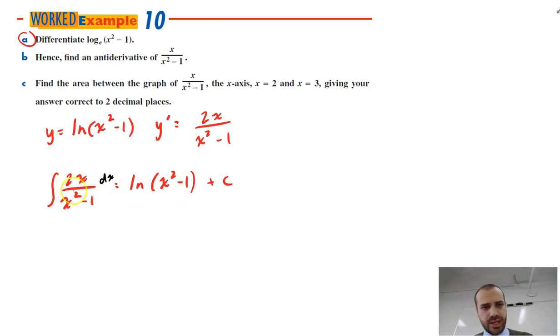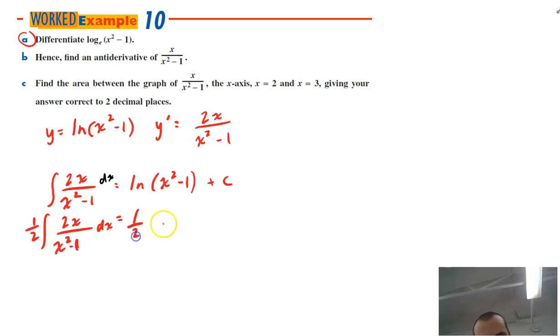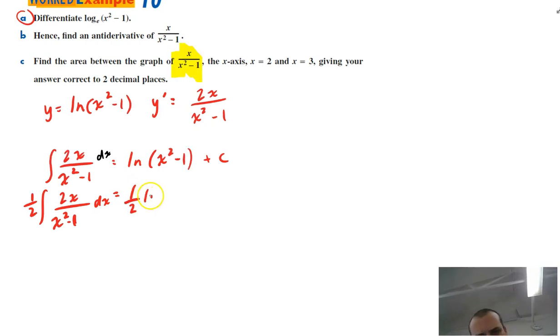So this is 2x over x squared minus 1, so I'm going to have to halve that, which means that 1 half integral 2x over x squared minus 1 with respect to x equals 1 half ln x squared minus 1 plus, and then we're dividing that c by a half, so it's just going to be like some other c value.